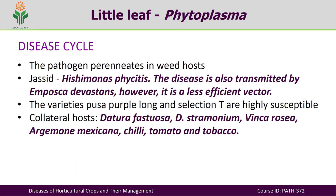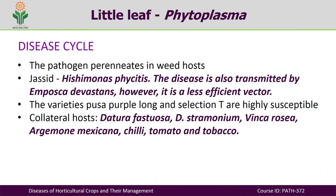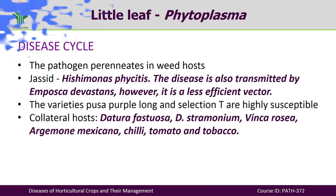Some of the jassids which transmit this disease include Hishimonas phycitis, which is the important vector transmitting this disease. It is also transmitted by Amrasca devastans, though it is a less efficient vector. Some varieties like Pusa Purple Long and Tea Selection are highly susceptible. There are also collateral hosts, including Datura fastuosa, Datura stramonium, Vinca rosea, Argemone mexicana, chili, tomato, and tobacco.